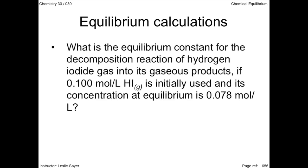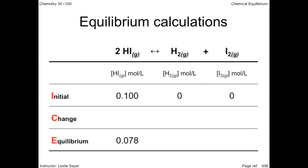In this question we're asked to find the equilibrium constant based on the initial concentration and final concentration of hydrogen iodide gas. The concentrations of the products are important in our calculation, but are not mentioned. An ICE table is a convenient way to organize the data. ICE stands for the row headers: initial, change, and equilibrium.